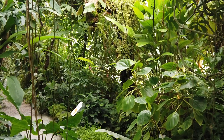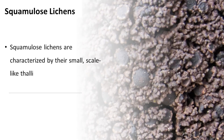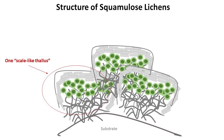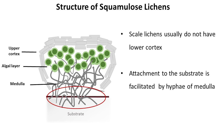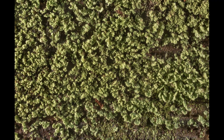Squamulose lichens are characterized by their small scale-like thalli. These thalli are typically less than a few centimeters in size and are often overlapping and densely packed together, making a structure that resembles roof shingles. Squamulose lichens usually don't have a lower cortex and are attached to the substrate by hyphae of the medulla, a feature that makes them similar to crustose lichens. On the other hand, they can be raised from the substrate and appear leafy, resembling foliose lichens. Overall, squamulose lichens are intermediate between crustose and foliose lichens.